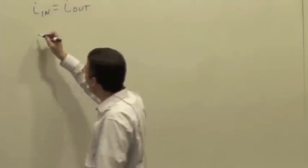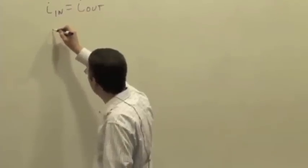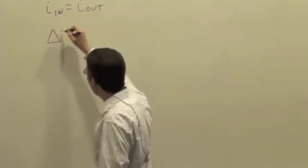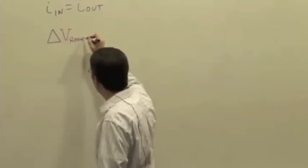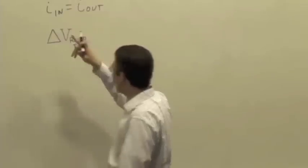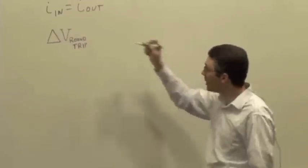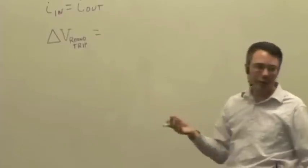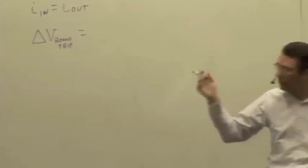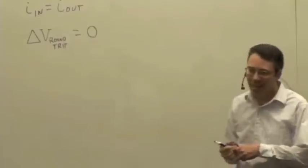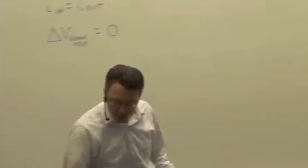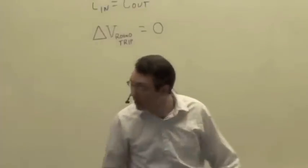And another one we're going to be using is something we've seen before, is that the change in electric potential if you go on a path that's round trip, so your starting point is the same as your ending point, delta V round trip is equal to what? Zero. So that's a fundamental rule behind potential differences. And we've seen this before, so just to kind of remind you of how this works.